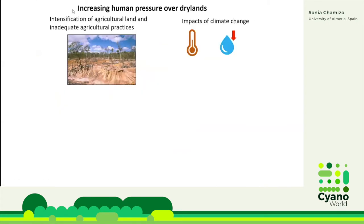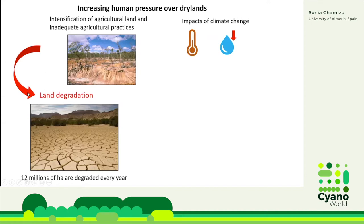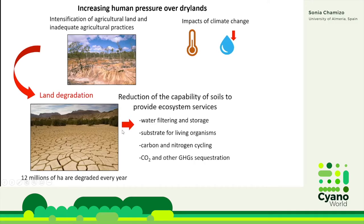These areas are undergoing very serious land degradation problems due to increasing human pressure over these regions, due to the intensification of agricultural land and also the application of inadequate agricultural practices, and also due to the impacts of climate change that predict an increase in temperature and a decrease in rainfall for the next decades. This will aggravate land degradation processes in these areas. It's been estimated that around 12 million hectares are degraded every year in drylands.